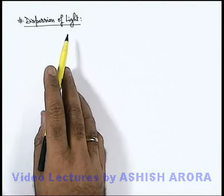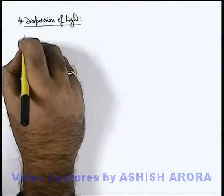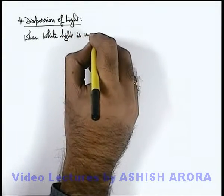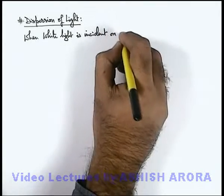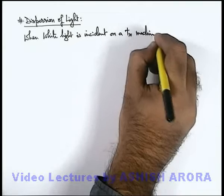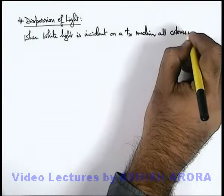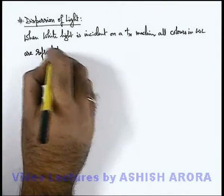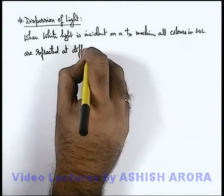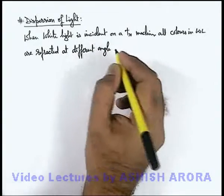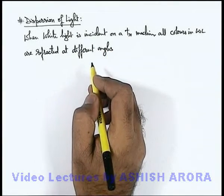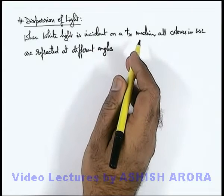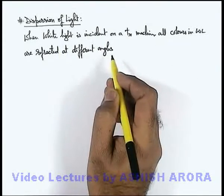Let us now study about dispersion of light. When white light is incident on a transparent medium, all colors in white light are refracted at different angles. This is because the refractive index of light depends on its wavelength. So for different colors, as wavelength is different, the refractive index for the same medium would be different. So when white light is incident, all colors are refracted at different angles.